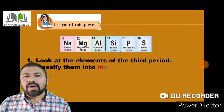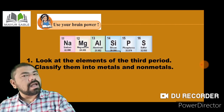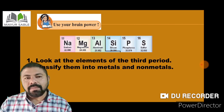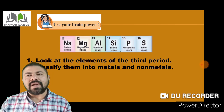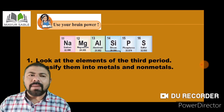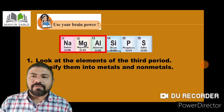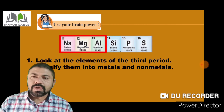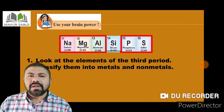In your textbook the question is given under the heading 'Use Your Brain Power': look at the elements of the third period and classify them into metals and non-metals. The elements in the third period are sodium, magnesium, aluminium, silicon, phosphorus, sulfur, etc. Sodium is a metal, magnesium is also a metal, and aluminium is also a metal, whereas phosphorus and sulfur are non-metals.